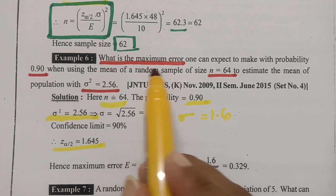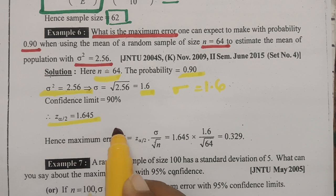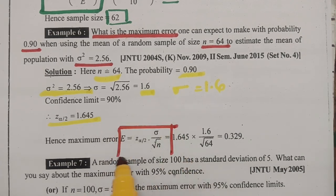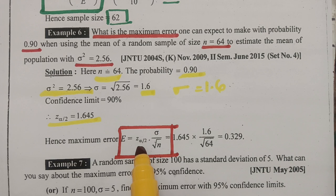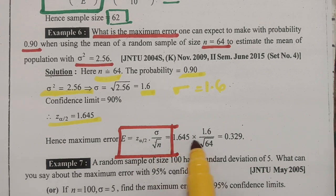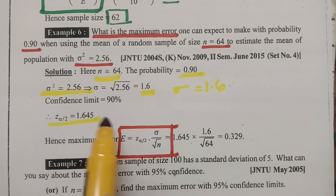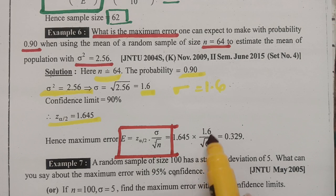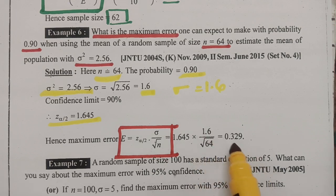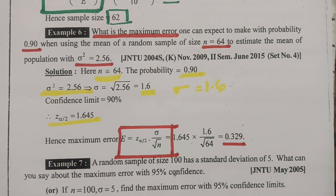What is needed? The maximum error is needed. For finding the maximum error, the formula is: E is equal to Z alpha by 2 · sigma / root n. So Z alpha by 2 is 1.645, sigma value is 1.6, and N value is equal to 64. All the data is ready. Substituting and using the calculator, therefore the maximum error is 0.329.